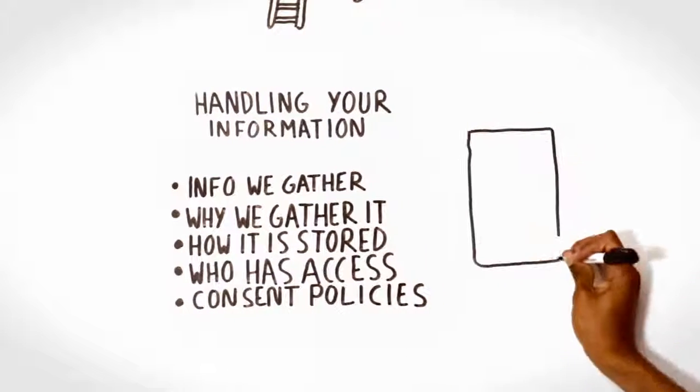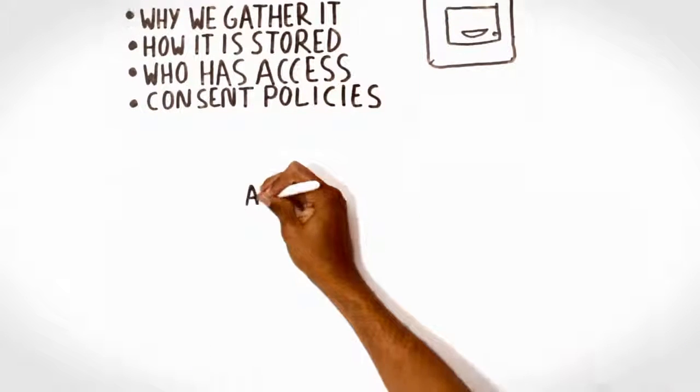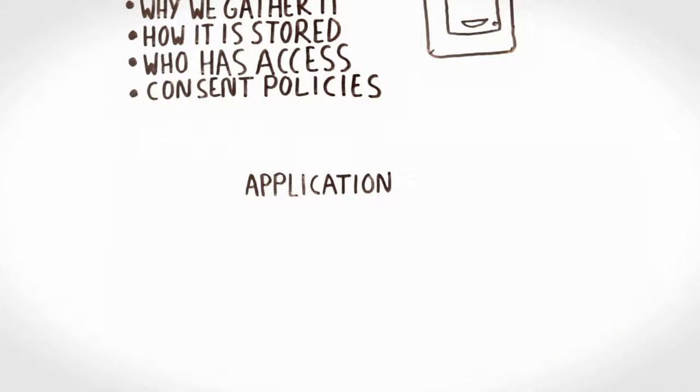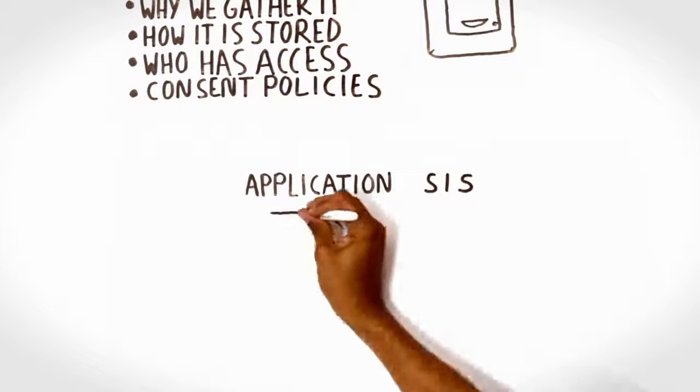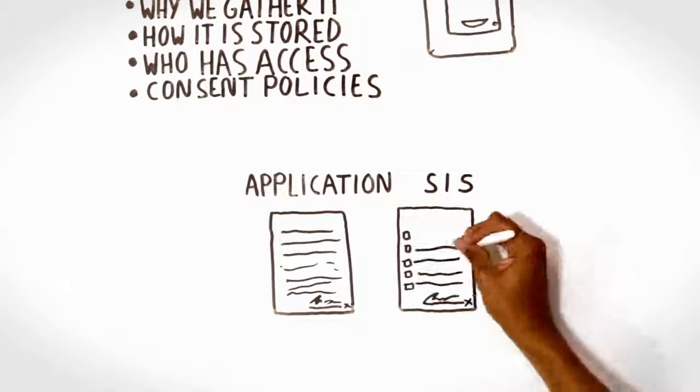DSOs keep any information you share with us to confirm your eligibility for services. We also keep a copy of your application and SIS information. This information helps us confirm that you are eligible to receive services and better understand how we can help you plan.